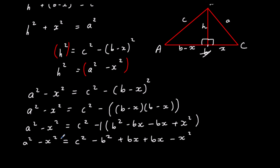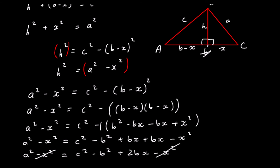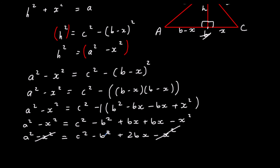Collecting like terms, I've got two Bx's making 2Bx. I can also see I've got minus x squared on both sides of the equation, so adding x squared to both sides cancels them out. That leaves me with A squared equals C squared minus B squared plus 2Bx.